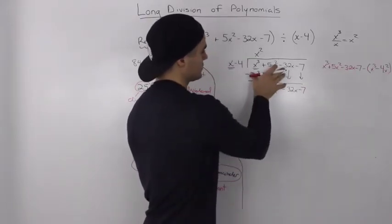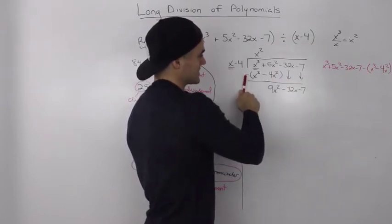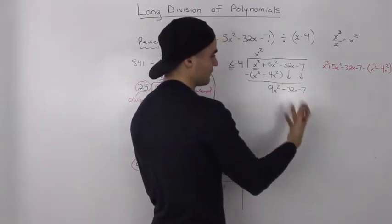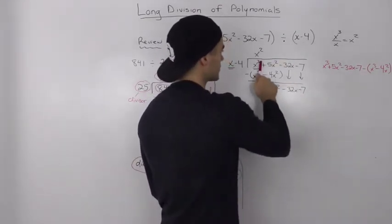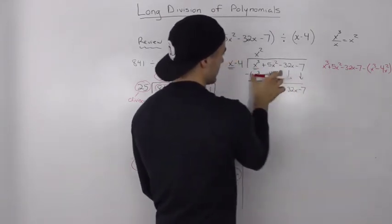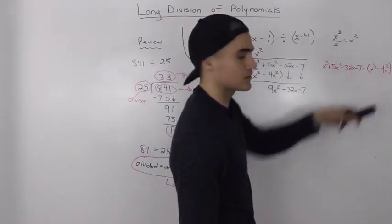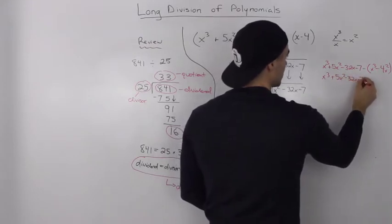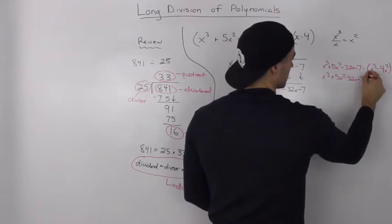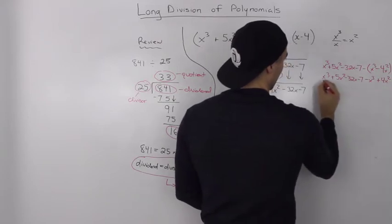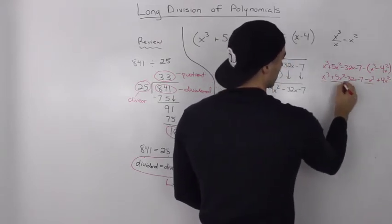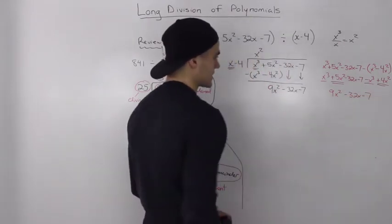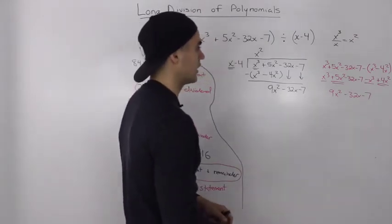A note: many students make mistakes doing this vertical subtraction because they forget to distribute the negative to the second part of the expression. My suggestion is to do this subtraction on the side before you're fully comfortable doing it vertically. So take the dividend x cubed plus 5x squared minus 32x minus 7 and subtract the expression, distributing the negative: negative x cubed plus 4x squared. The x cubed terms cancel, 5x squared plus 4x squared gives 9x squared, and minus 32x minus 7 remains.